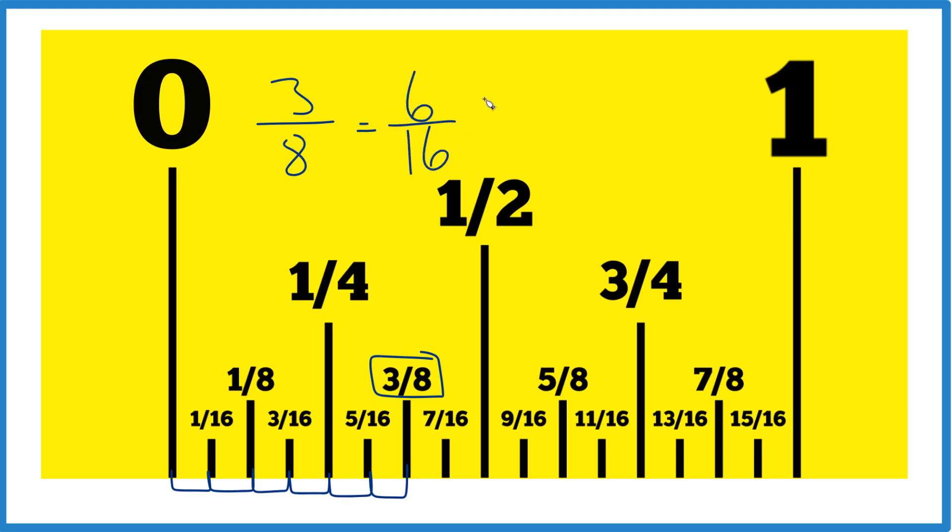Now I can pretty clearly see that here is my halfway between these two distances. And we have one, two, three sixteenths. So half of three eighths is going to be three sixteenths. That's our halfway mark right there.